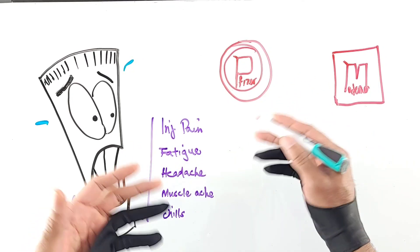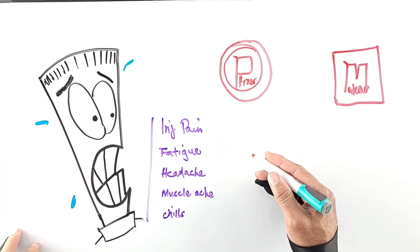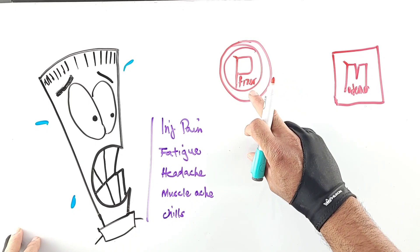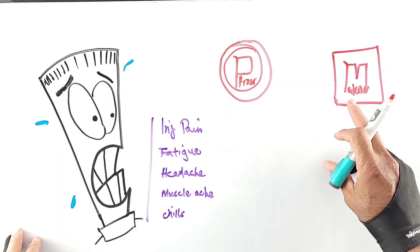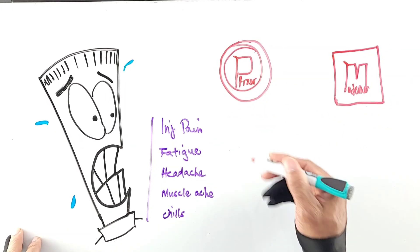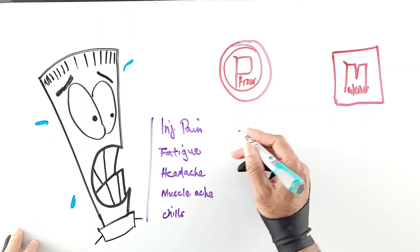So we're going to put P here for Pfizer, M here for Moderna, and then we're going to look at the stats. So first off, the most common side effect for both was injection site pain, just from where the needle pokes in your arm.